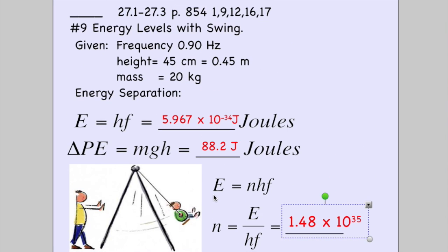Okay, number nine. Number nine reads, a child's swing has a natural frequency of 0.9 hertz. So the first thing we want to know is what is the separation between possible energy values in joules? We can think of that as, what is that basic minimum change in height?